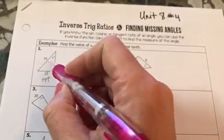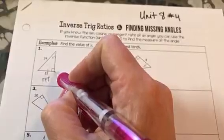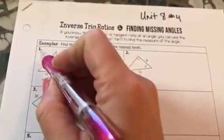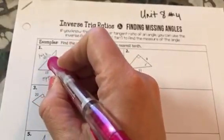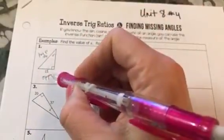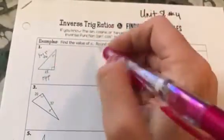24 is across from the 90 degree angle, it has to be the hypotenuse. Let me write that down, hypotenuse. So I've got an opposite side and a hypotenuse side.